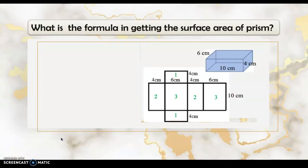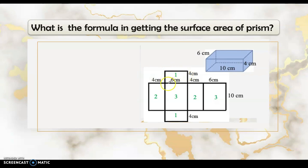Now, what is the formula for getting the surface area of a prism? Let's analyze and figure out the formula for the surface area of a rectangular prism without drawing its net every time. The height of the prism is 4 centimeters, the length is 10 centimeters, and the width is 6 centimeters. What we did was multiply length times width, length times height, and width times height, then multiply each by 2.